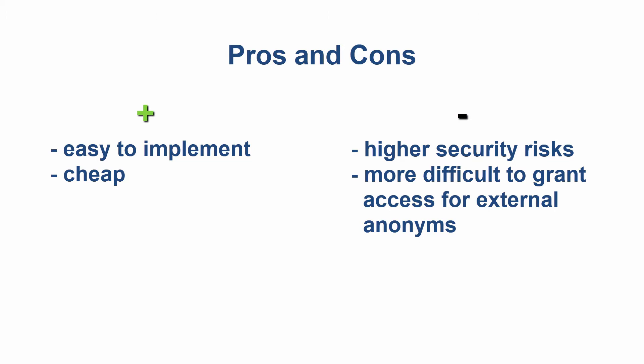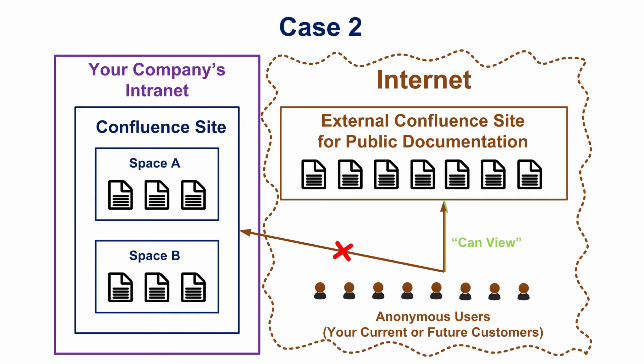A space administrator can accidentally permit access to the space he is responsible for, so your company's confidential information can be easily compromised. If you run your system in your company's network, it can be more difficult to grant anonymous access for external users, your partners for example. A great number of companies have found Confluence to be an extremely effective tool for knowledge sharing with clients. For example, a lot of Atlassian marketplace vendors are using Confluence as a product documentation portal to share essential information about their apps with current and potential customers.